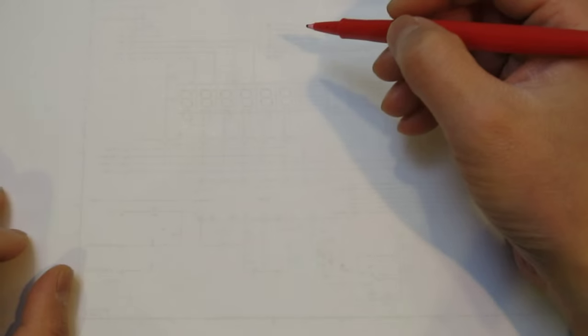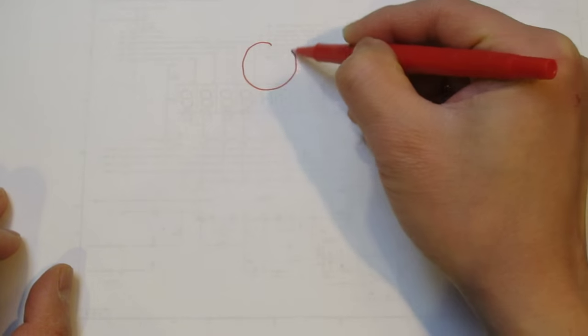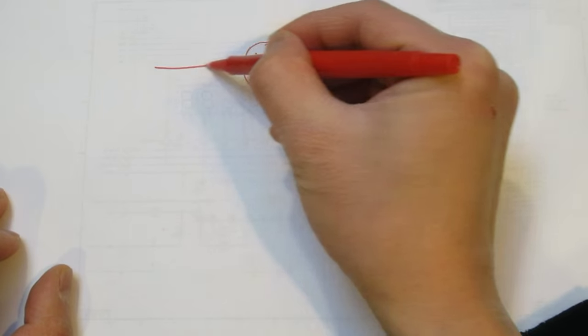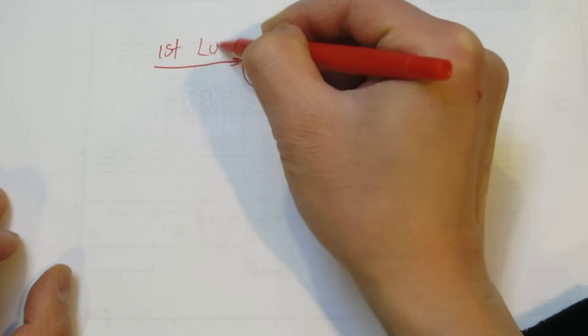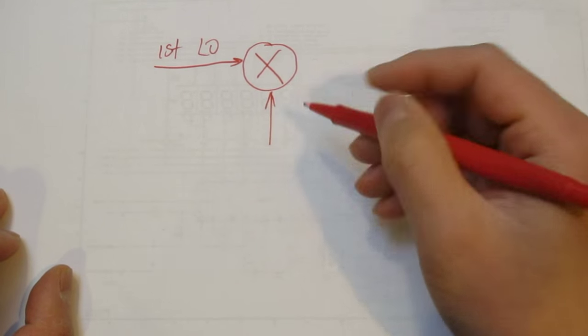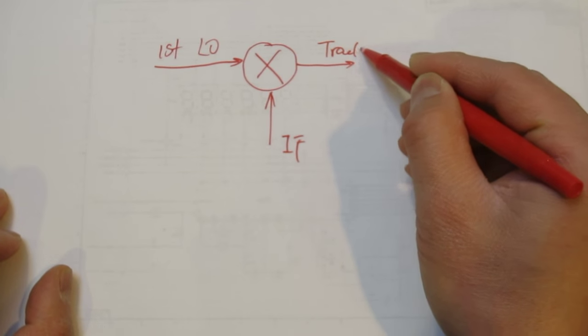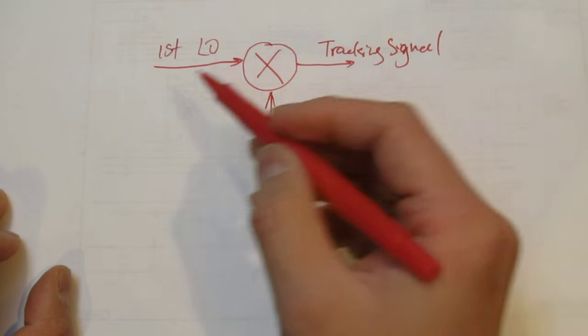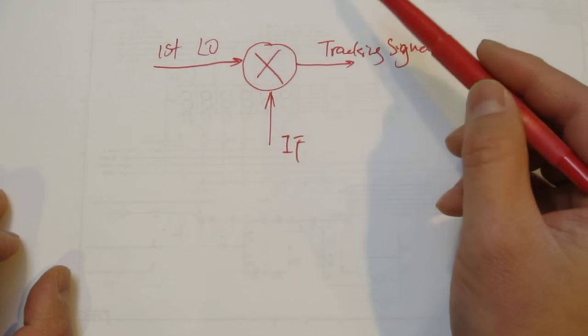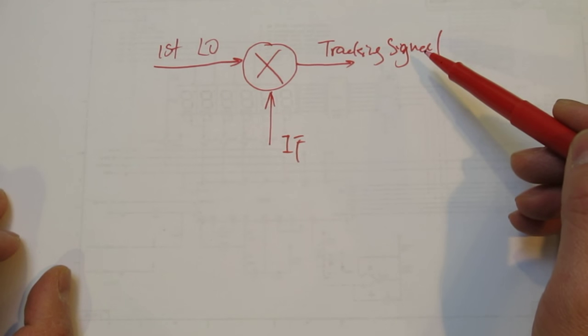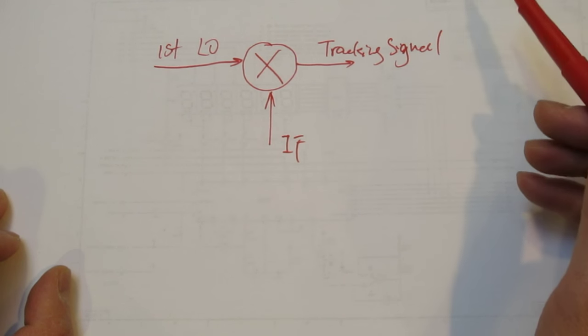Before going any further, I'd like to take a brief look at how a tracking generator works. The idea is to present to the spectral analyzer the same frequency that it's currently looking at. In its simplest form, every tracking generator has a mixer. This mixer takes in the LO signal — the local oscillator, typically your first LO — and subtracts a fixed frequency, typically your first IF. The result is the tracking signal. When we sweep through the frequency range and the first LO sweeps through, the tracking signal has the exact frequency that the spectral analyzer is looking at at any given moment.